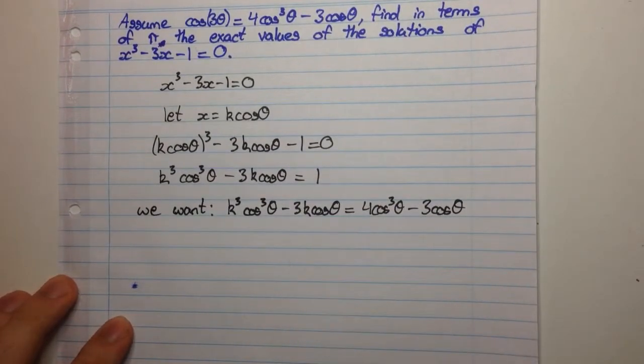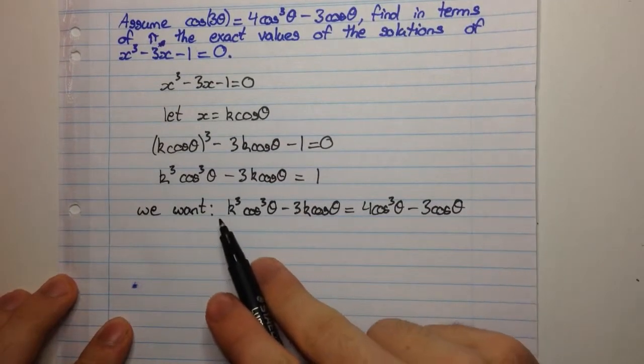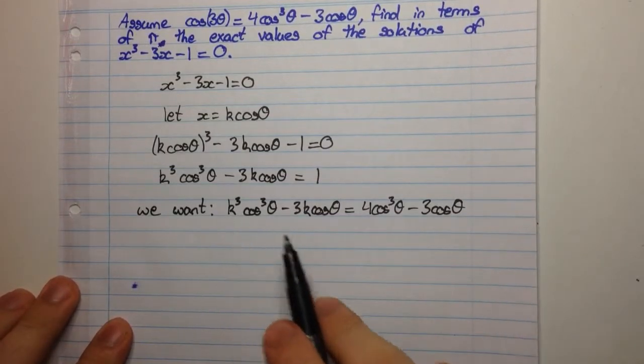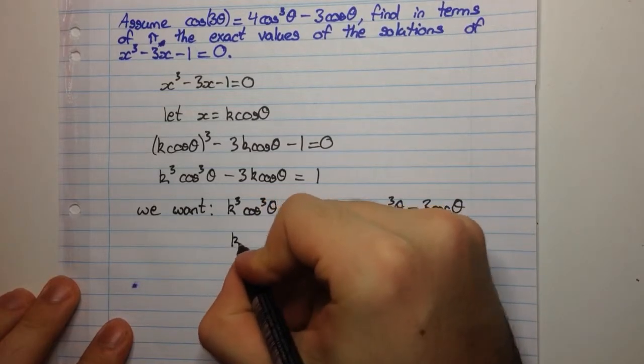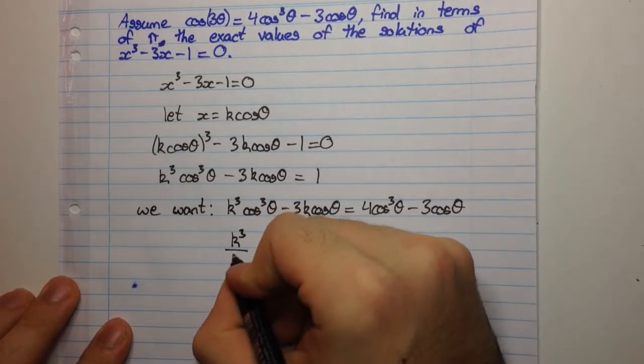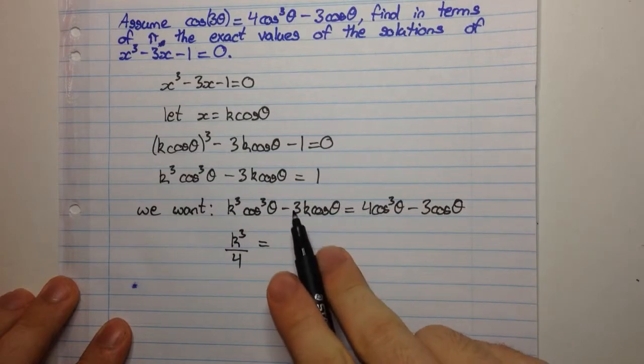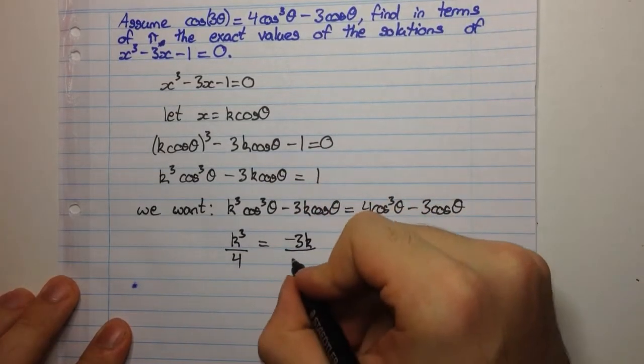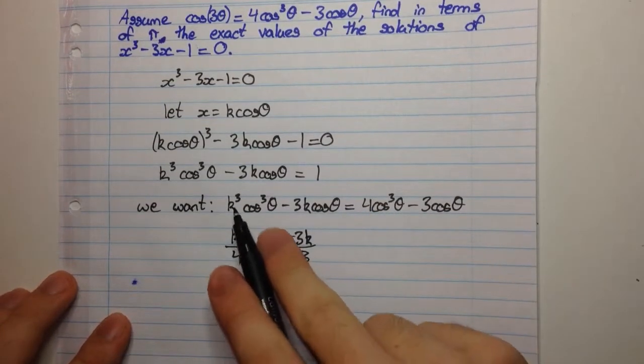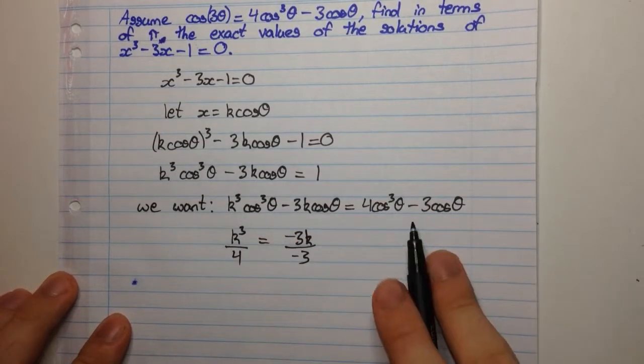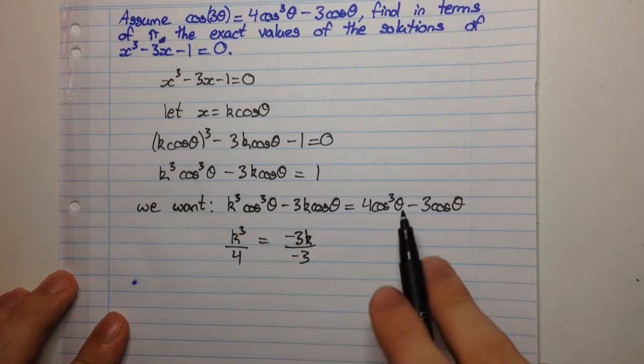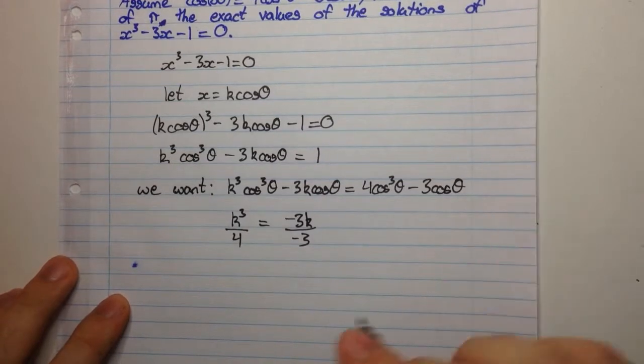So we're solving for k here. Now we can just take ratios of these coefficients. So we're going to have k³ over 4 is going to be equal to negative 3k over negative 3. And the reason we do this is because if we want these two to be equal, we need to find k so that this is in ratio with this. So now let's go ahead and solve for k.